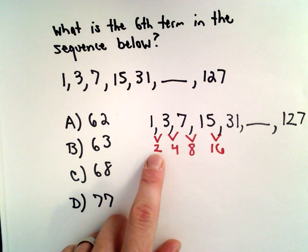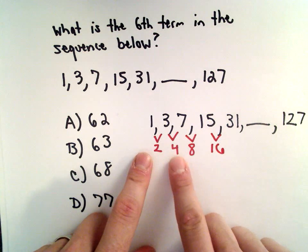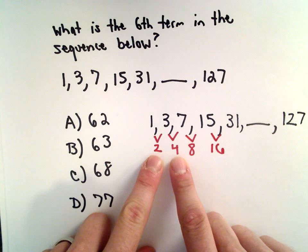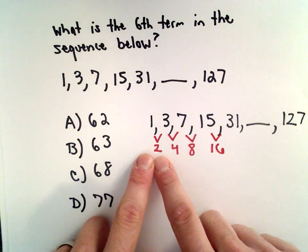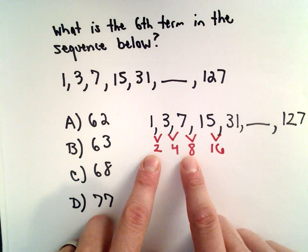It looks like to go to the next difference, I'm multiplying by 2, right? 2 times 2 is 4. 4 times 2 is 8.